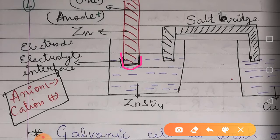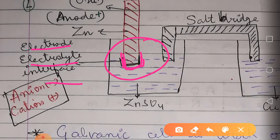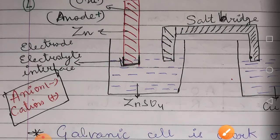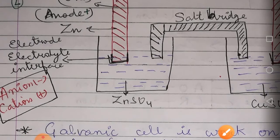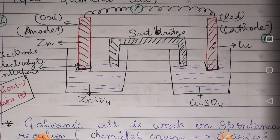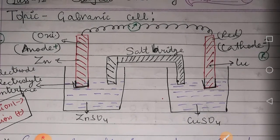The place where the electrode and the solution meet — where they come together — is called the electrode-electrolyte interface. Now we are going to study one by one the things related to this galvanic cell.